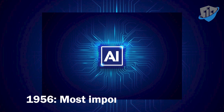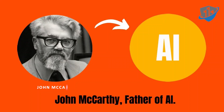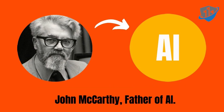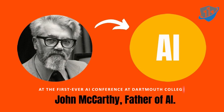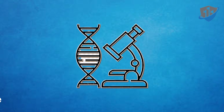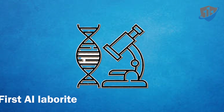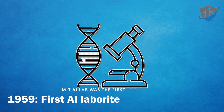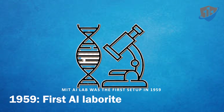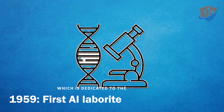1956 marks the most important year for artificial intelligence. John McCarthy coins the term 'artificial intelligence' at the first ever AI conference at Dartmouth College. In 1959, the MIT AI Lab was the first set up, dedicated to the research of AI.